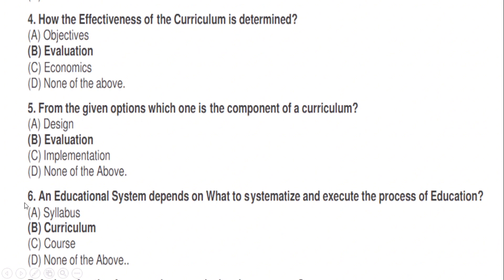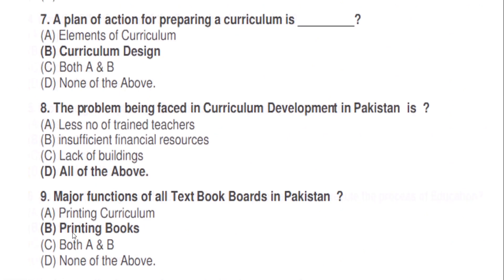From the given options, which one is a component of curriculum? Correct option: B — evaluation. An educational system depends on what type of system it is and how it executes the process of education. Correct option: B — curriculum.